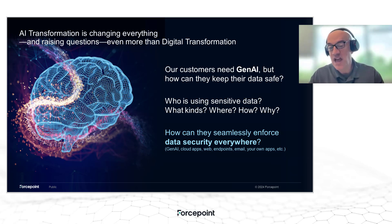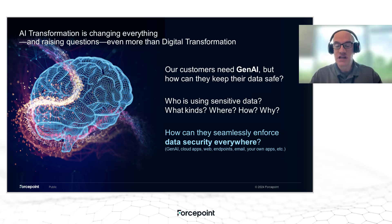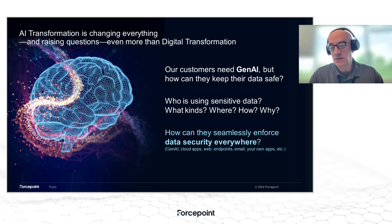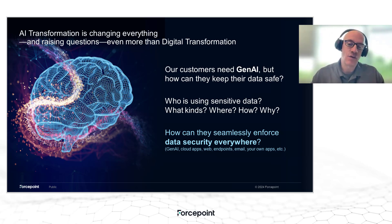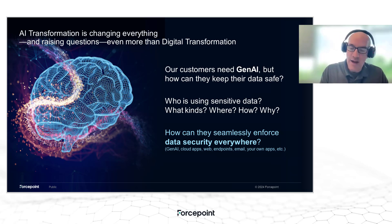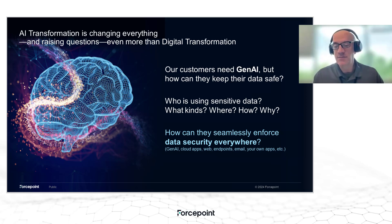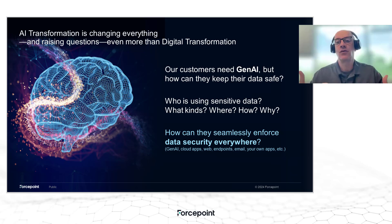Some of the key questions customers ask are: who's using sensitive data, what kinds of data is being used, where is it going, and how is it being used? There's a need for visibility in terms of Gen AI. And how do you seamlessly enforce data security everywhere — across Gen AI applications, cloud applications, the web, endpoints, and email, all across the board?